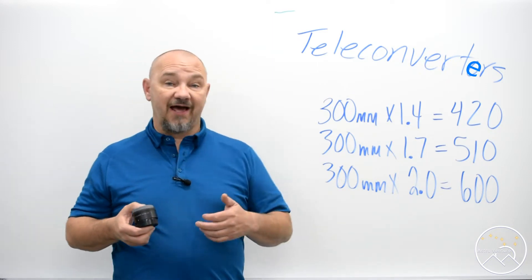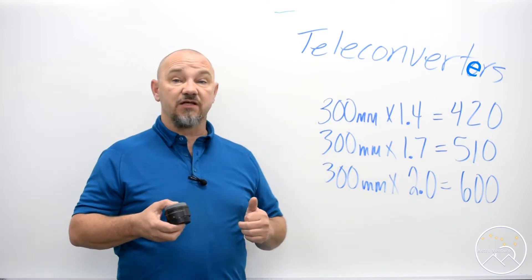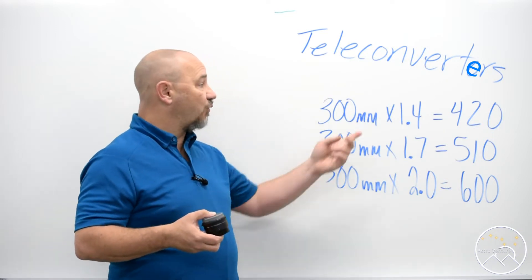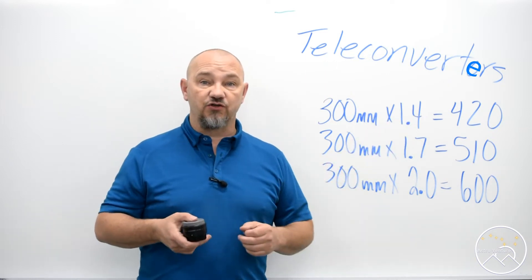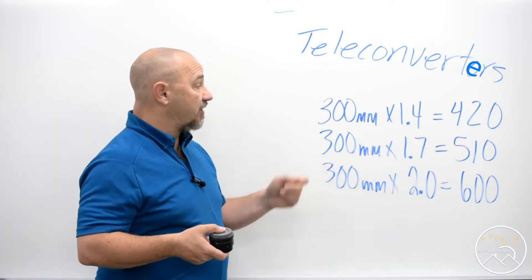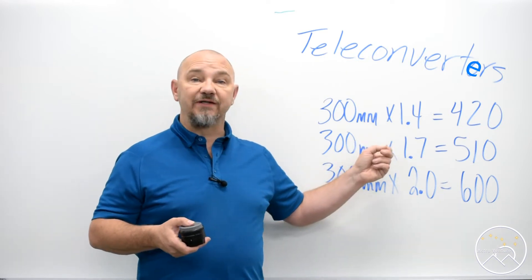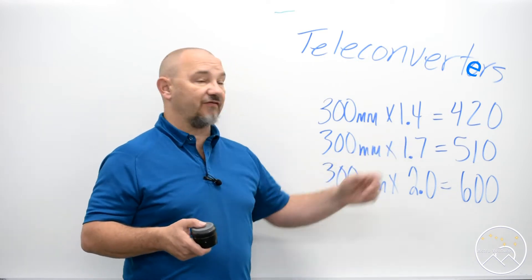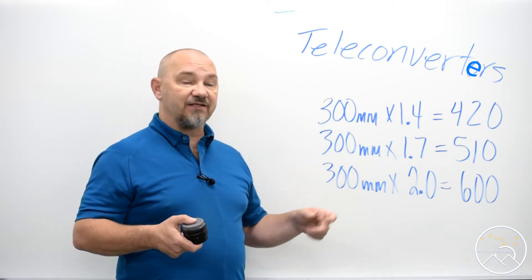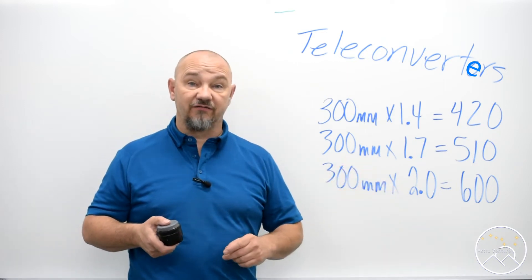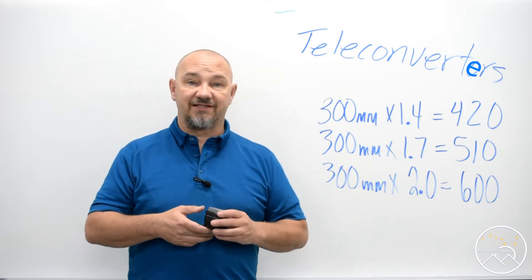So taking a look at a 300mm lens, in the Nikon lineup we have a 1.4 teleconverter and it will make your lens act as though it were a 420mm. 300mm with a 1.7 teleconverter will take you out to 510mm and a 300mm lens with a 2x teleconverter will actually take you out to 600mm.